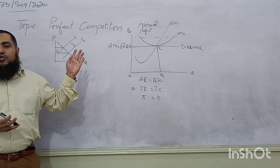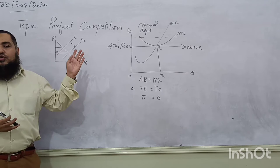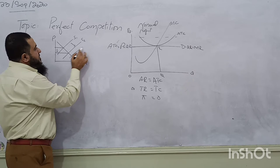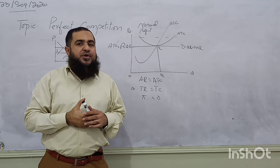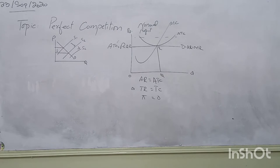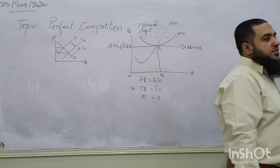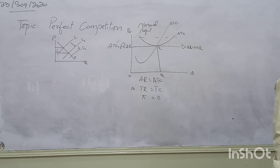If entry keeps increasing day by day with no barriers, many firms are entering and the market price is falling due to the increase in supply from new firms, or due to a fall in demand for the product — both can happen in the market. In that case, if the market price falls further below, cost becomes higher than average revenue, and the firm will be facing a loss.